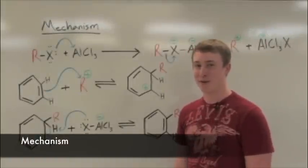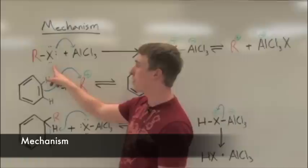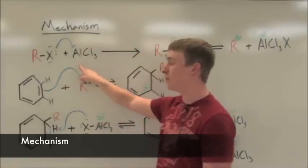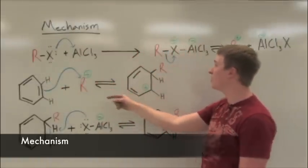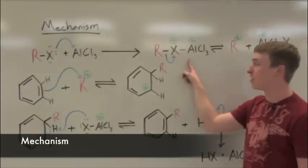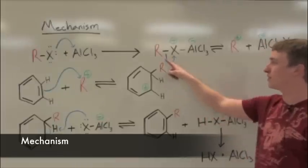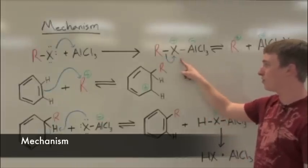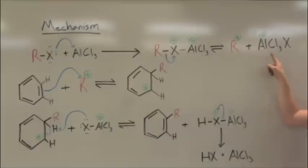In the general mechanism of a Friedel-Crafts alkylation, a lone pair from the alkyl halide will attack the aluminum of aluminum trichloride, giving you a Lewis acid-Lewis base complex. Heterolysis will occur between the R-group and halide group, giving you a carbocation and a counter-ion.